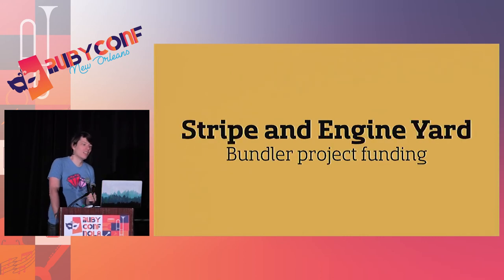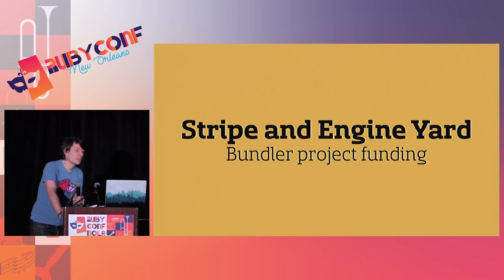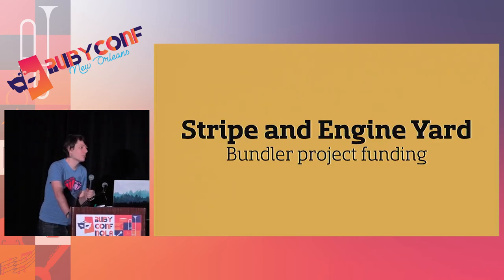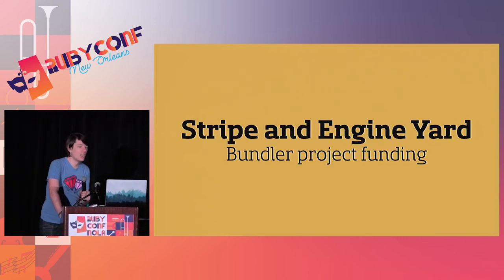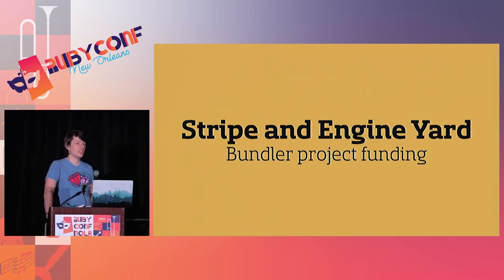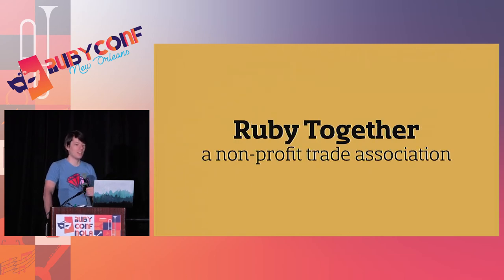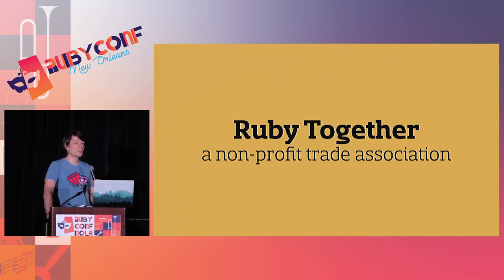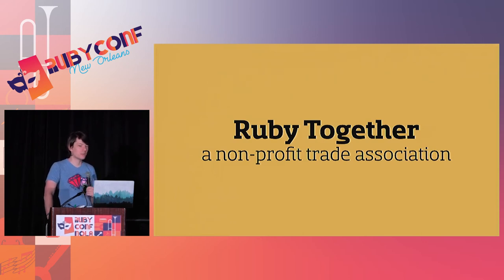This is also the point at which Stripe and Engine Yard started funding the Bundler project directly. On top of helping fund some development work, that money made it possible for us to incorporate Ruby Together. Ruby Together takes funding from the community and uses it to pay developers to work on community projects, which is pretty cool.